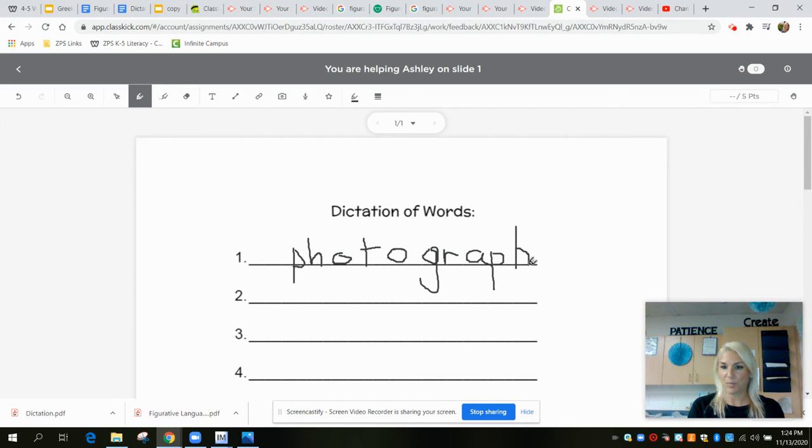We're going to do two more words today. Your next word is, which one do I want to pick? Photogram. Repeat after me. Photogram. Now you try. Let's go ahead and pound out our syllables. Ready? One, two, three. Photogram. You should have three syllables. Nice job.